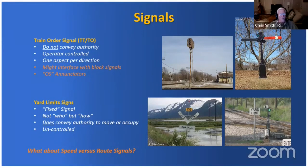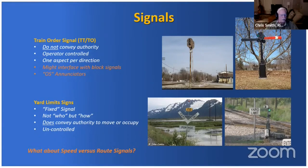Speed versus route signaling: there is a difference. The aspects are different and convey different rules. Generally, if you're a western-half-of-the-continent modeler, you're probably looking at route signaling. If you're an eastern-half modeler, your prototype might use speed signals. A layout control bus can handle either without changing hardware — that's a very important thing to note. So there's a case for layout control busing your signal system.